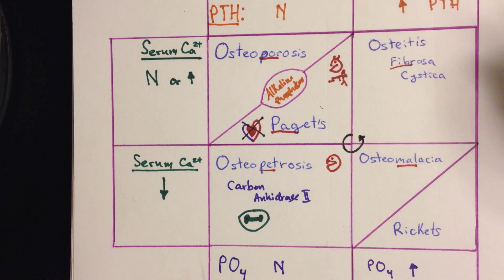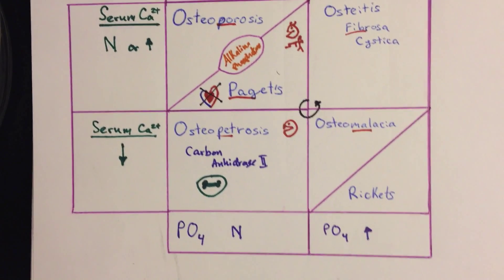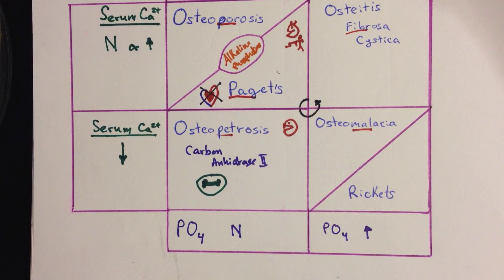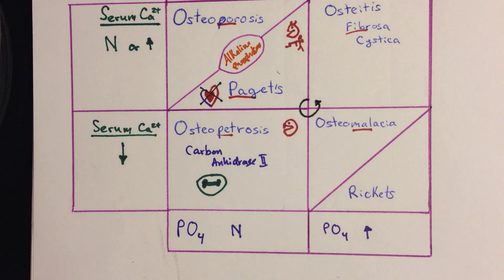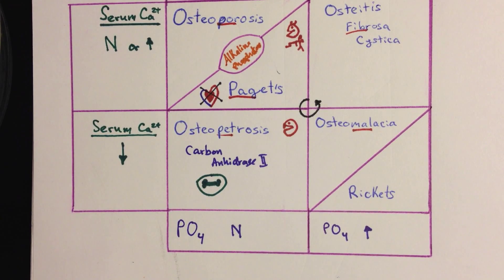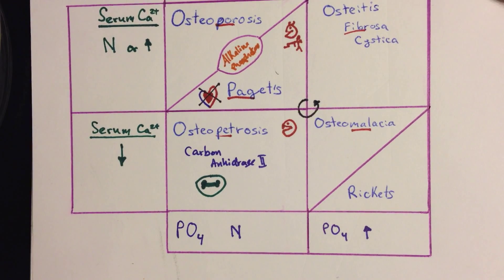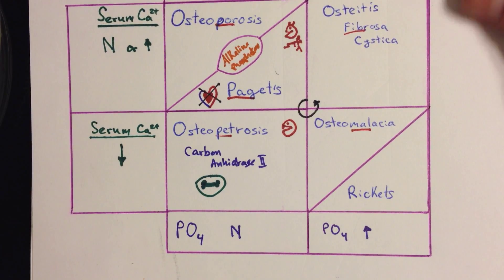Osteomalacia and rickets involve a vitamin D deficiency. Rickets happens in children, osteomalacia happens in adults. You have inappropriately mineralized bones because osteoblasts are working without calcium — they don't have vitamin D and can't lay properly mineralized bone without it.